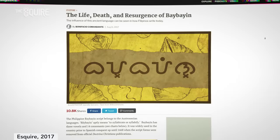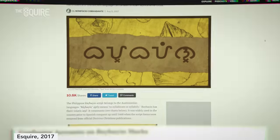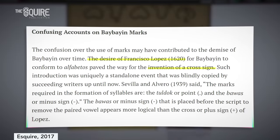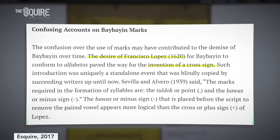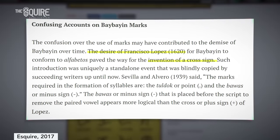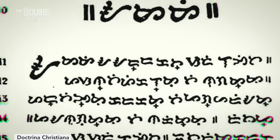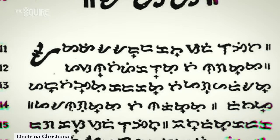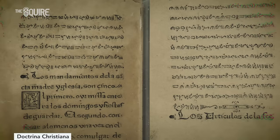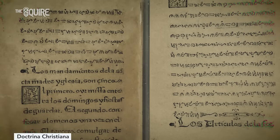This changed in 1620 when a Spanish priest, Father Francisco Lopez, introduced the kruskudlit. The Spanish had to learn Baybayin to better communicate with the Filipinos, and the kruskudlit helped them translate many of their own terms, which tended to have a lot of pure consonants.